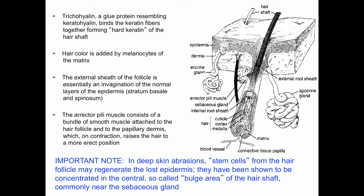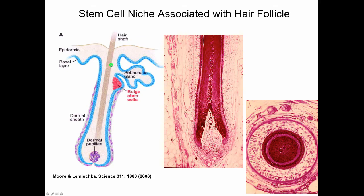In deep skin abrasions, there are stem cells from the hair follicle that can regenerate the lost epidermis. These cells have been found to be concentrated in the central, or so-called bulge area of the hair shaft, commonly seen near the sebaceous glands. So if there is a severe abrasion and you lose a lot of the epidermal surface, as long as the stem cells are still present in the bulge area, the epidermis can more readily regenerate. These histological images show the hair shaft in longitudinal and cross-section, with the papilla and hair bulb shown. You don't need to remember the different layers in the hair follicle for an exam.